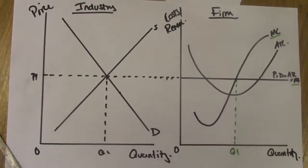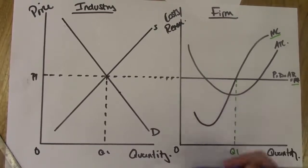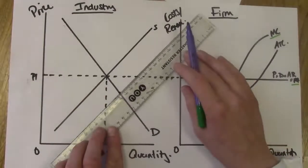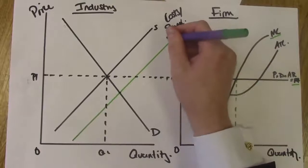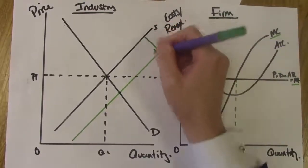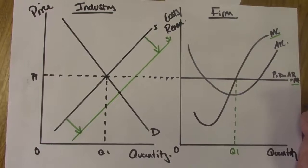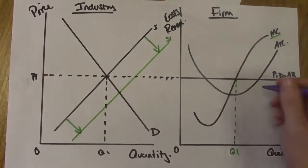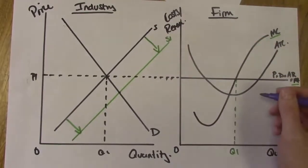So how does the industry react? Outside firms see this firm making a supernormal profit and think: let's enter the industry. Whenever new firms enter the industry, it increases market supply. On our diagram we now need to show an increase in the market supply curve, so the supply curve shifts from S to S1. There's now an increase in market supply because more firms are producing this profitable good, hence the outward shift in the market supply curve.